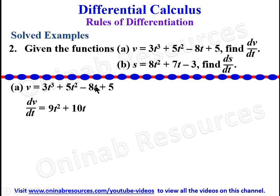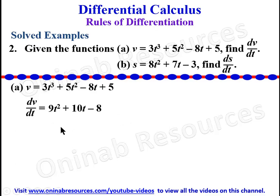t raised to power 0 is 1, so we are left with negative 8. The derivative of the constant 5 is 0, so it is ignored. Therefore dv/dt = 9t^2 + 10t − 8.